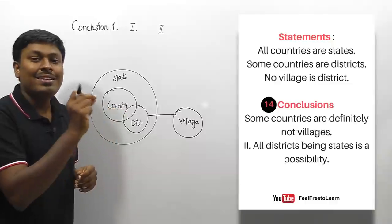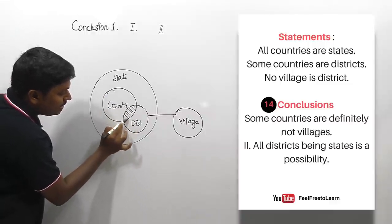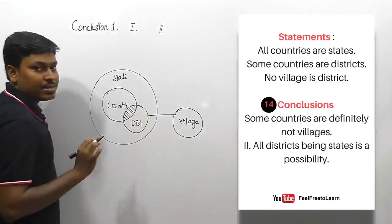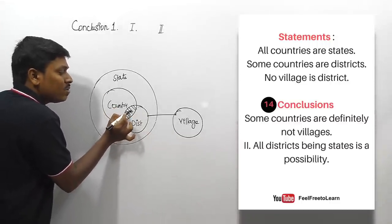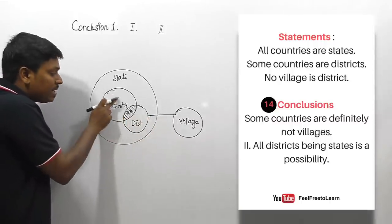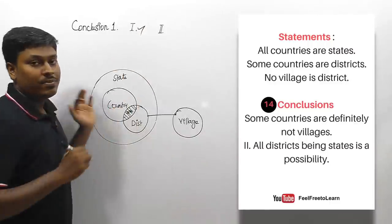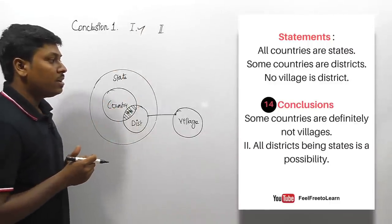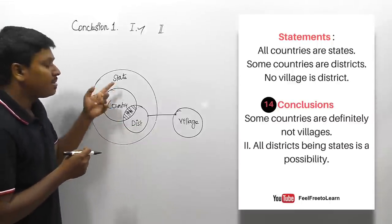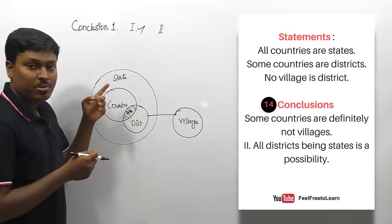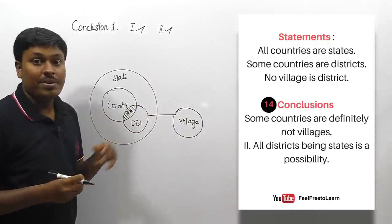Some country in this region is district, and there is no possible connection between village and district, so some countries are definitely not village — correct. Conclusion one follows. Conclusion two: 'all district being state is a possibility' — all districts are state, and now they say all districts being state is a possible, which is exactly correct. So for this question, both conclusions follow.